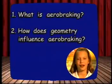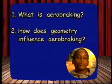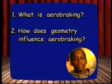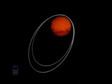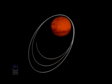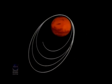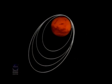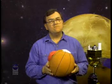What is aerobraking? How does geometry influence aerobraking? Aerobraking is when we use drag from the atmosphere to gradually shrink the orbit down. We used the drag from the atmosphere to gradually slow the orbit down so that it would shrink from a highly elliptical 45-hour orbit down to a very circular 2-hour orbit around Mars. This is geometry in action.